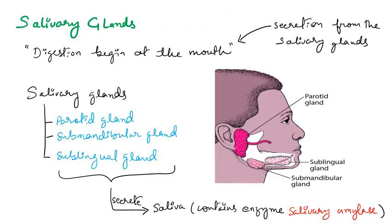First comes the salivary gland. Digestion starts or begins at the mouth itself. In the mouth, you have salivary glands around it, and these salivary glands produce saliva. There are three salivary glands: first is parotid, then submandibular, and sublingual. The parotid gland is present near the ear.